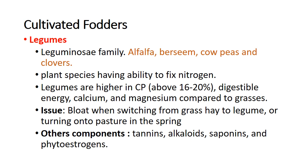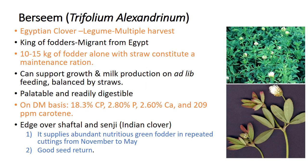Legumes have protein content above 16 percent, which can go up to 20 percent. Their digestible energy, calcium, and magnesium contents are comparatively better than grasses. One issue is that feeding excess amounts of legumes can cause bloat, especially when switching animals from dry forage to legume or turning them onto pasture in spring. In addition to bloat, anti-nutritional factors such as tannins, alkaloids, saponins, and phytoestrogens are also present in legumes. Berseem — Trifolium alexandrinum — is also known as Egyptian clover. It is a legume that can be harvested multiple times and is also called the king of fodders, originating from Egypt.